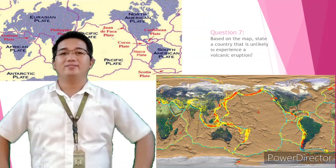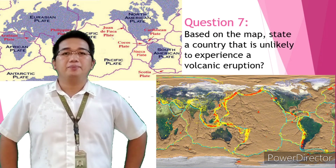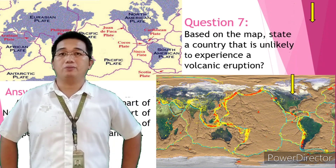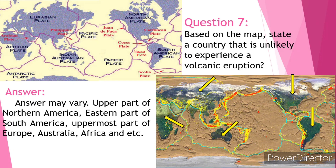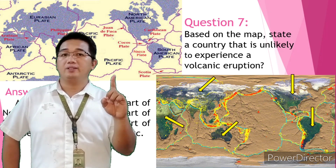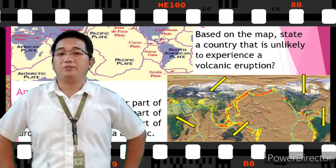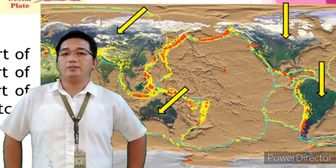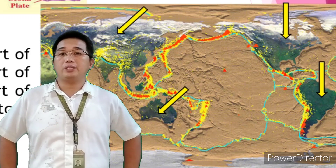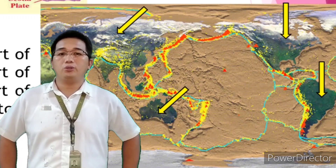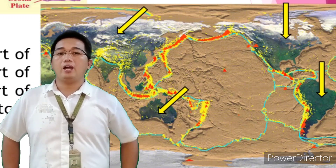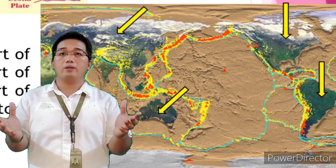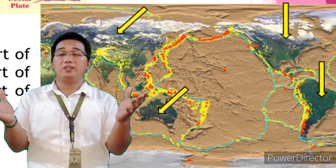Question number seven: based on the map, state a country that is unlikely to experience a volcanic eruption. The answer may vary. Look at the upper part of Northern America, the eastern part of South America, the uppermost part of Europe, Australia, Africa, and some parts of the globe where the red triangles are not located.